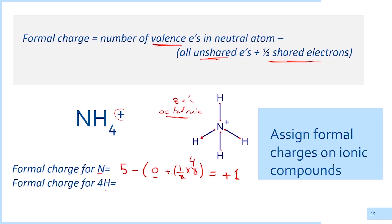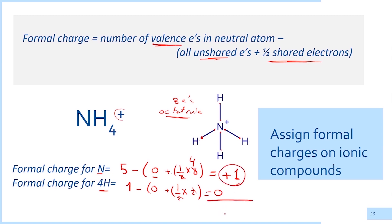For the four hydrogens: one valence electron minus zero unshared electrons and half of the two shared electrons — because each hydrogen has one single bond formed of two electrons — equals zero. So there is a zero formal charge on each hydrogen. The total charge is therefore positive one, which is the positive charge we usually see on top of the ammonium ion.